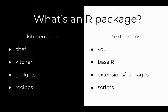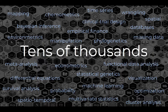Sometimes it's helpful to conceptualize things by way of analogy. There are numerous comparisons between concepts in computing and cooking, so we'll add another here. You can think of R packages as kitchen tools. Imagine you're the chef, base R is the kitchen, and packages are like the special gadgets you use to cook and bake new recipes. If you have a certain task, chances are there's a relevant package that will help you accomplish it.